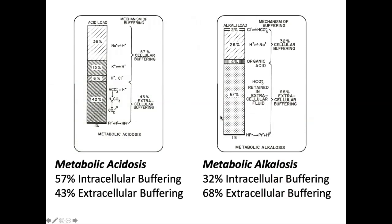How much is intracellular versus extracellular? In the setting of metabolic acidosis, intracellular buffering appears to have more of a role than extracellular. Whereas in an alkalosis — if we added too much base — extracellular buffering plays more of a role than intracellular. These experiments were done on dogs and may not perfectly apply to humans, but it's close.